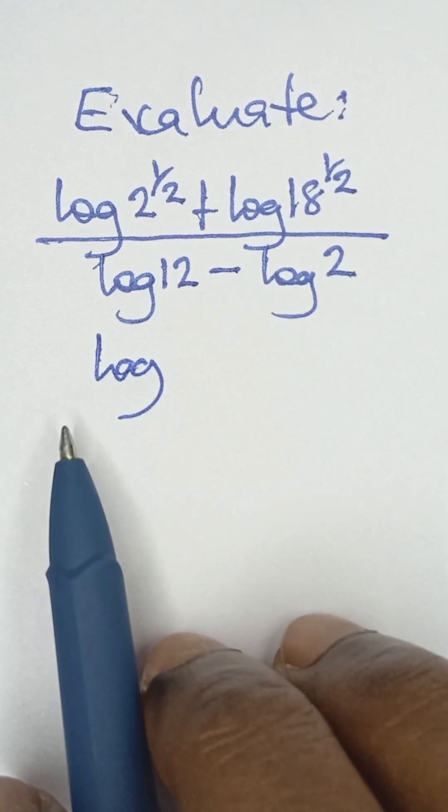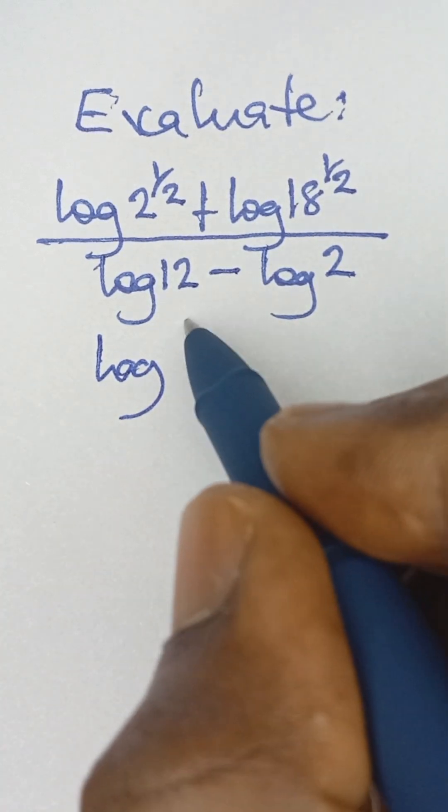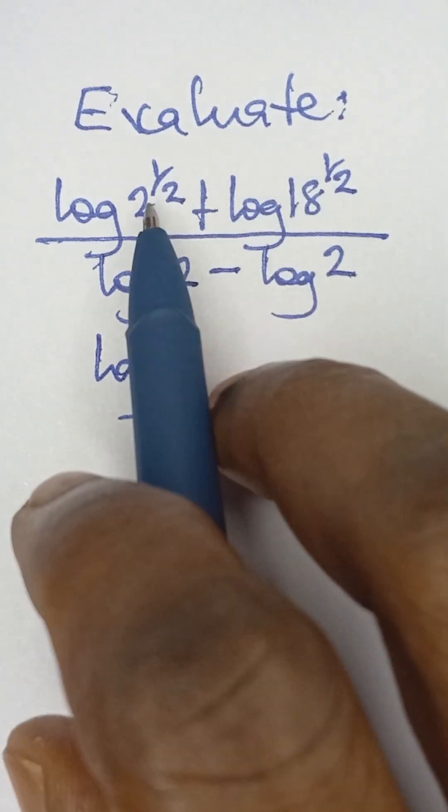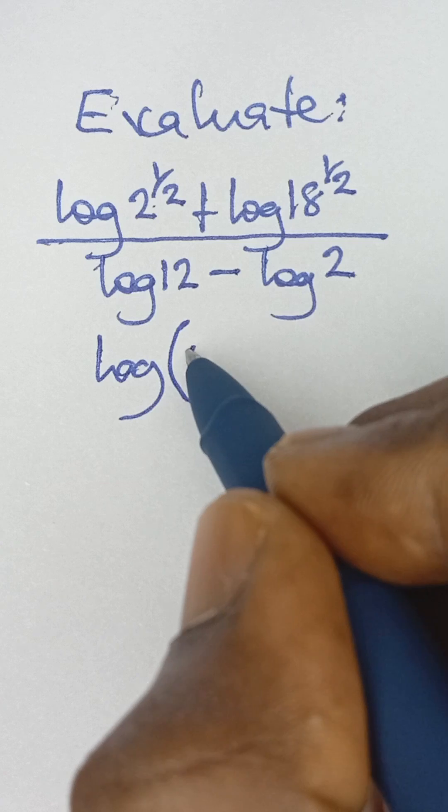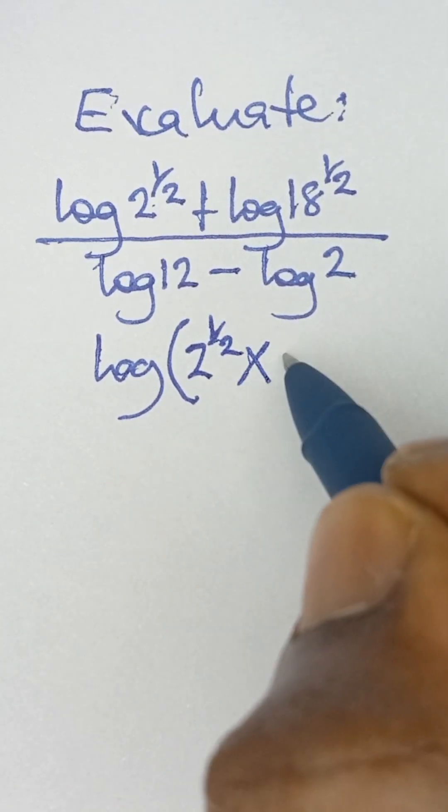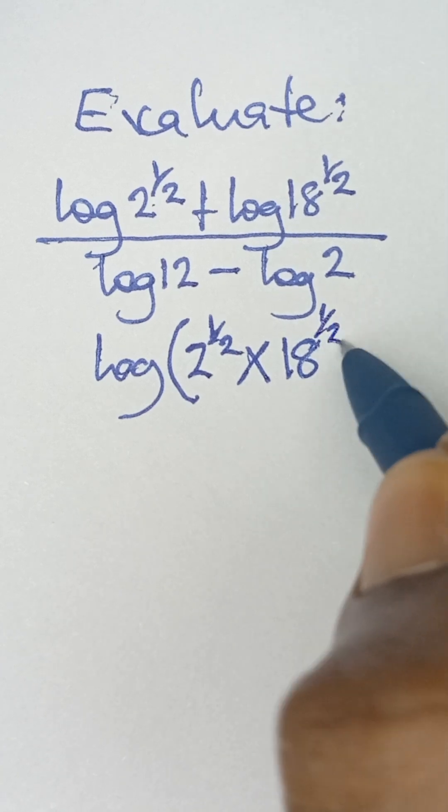And then what we do next is open up brackets and because of this addition, we are going to multiply these terms together, these numbers. So it becomes 2 raised power half multiplied by 18 raised to the power half.